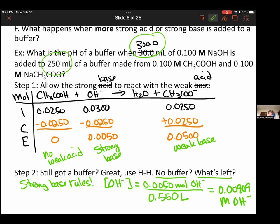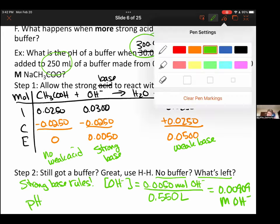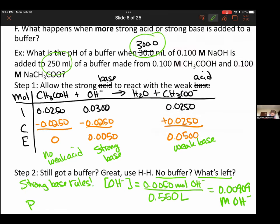The pOH is the negative log of the concentration of hydroxide, which will be the log of 0.00909, giving us 2.04. Then pH equals 14 minus pOH, which gives us 11.96.